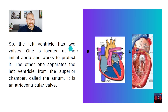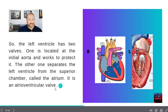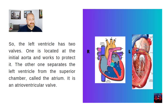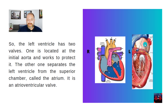So the left ventricle has two valves. One is located at the initial aorta and works to protect it. The other one separates the left ventricle from the superior chamber called the atrium. It is an atrial ventricular valve. One valve is between the ventricle and the left atrium, and the other one is protecting the aorta.